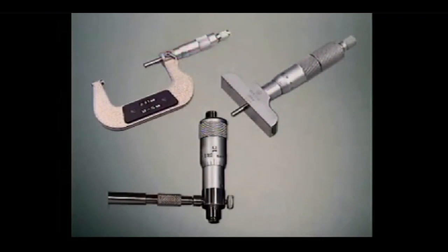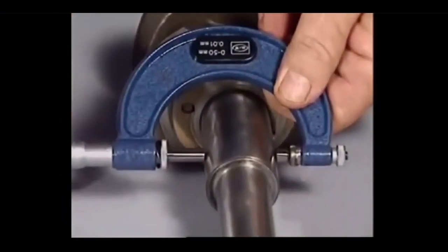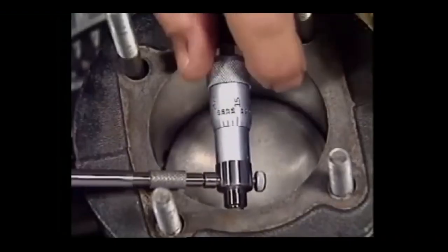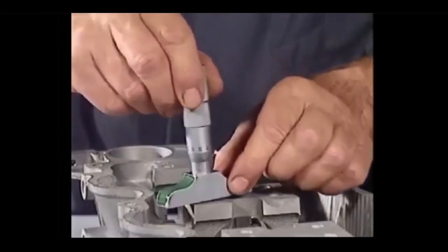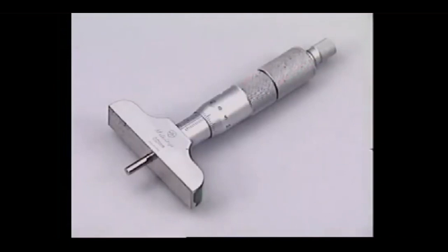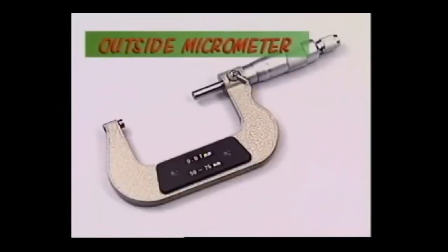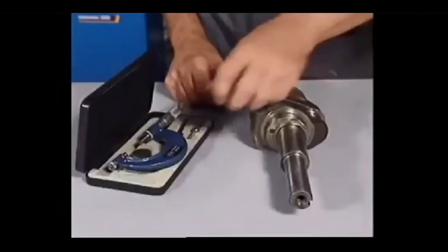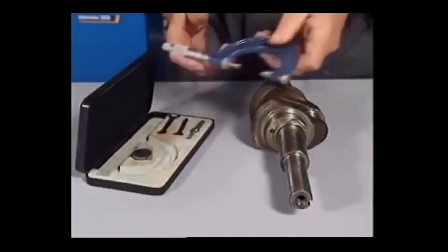For the highest accuracy in measuring distances, micrometers are used. Like calipers, they can measure an outside dimension, inside, or depth. But a different mic, as they're called, is needed for each task. This is an outside micrometer, the most common one.